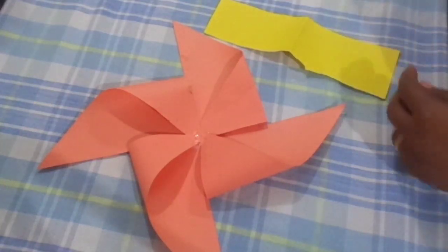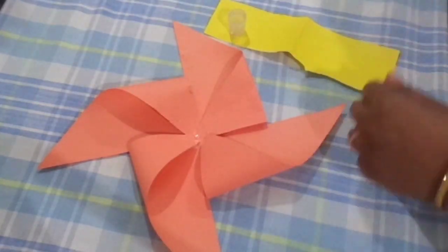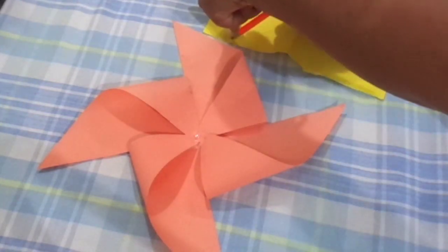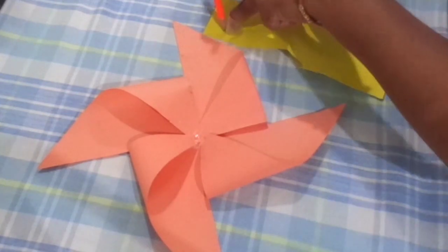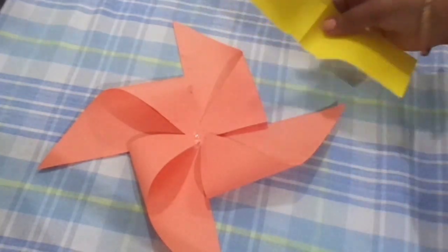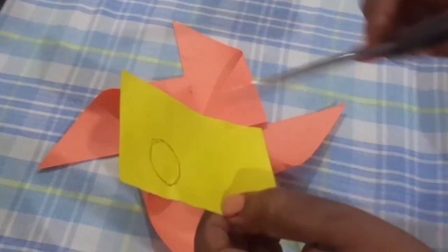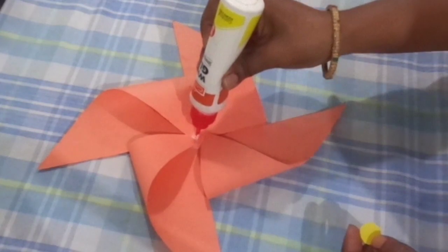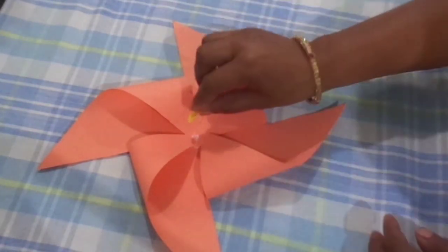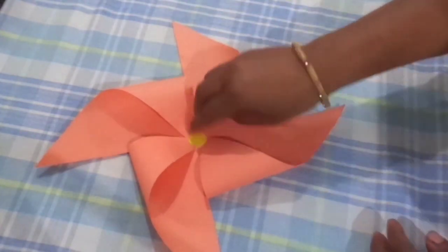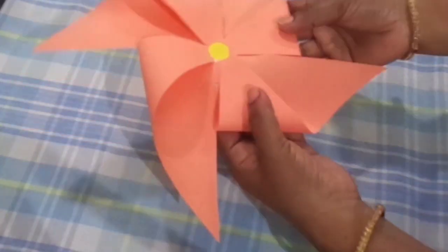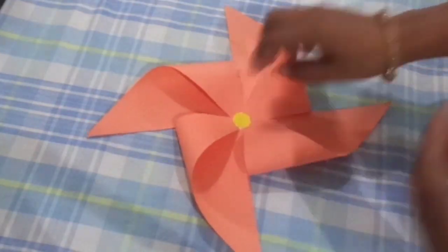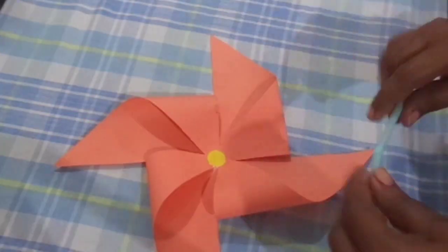This is done. Now press it. Now it is ready. Now we will make a small circle. So the cap of glue, I will make a small circle. After making a small circle, we will cut it slowly and carefully. Then again glue and stick it.